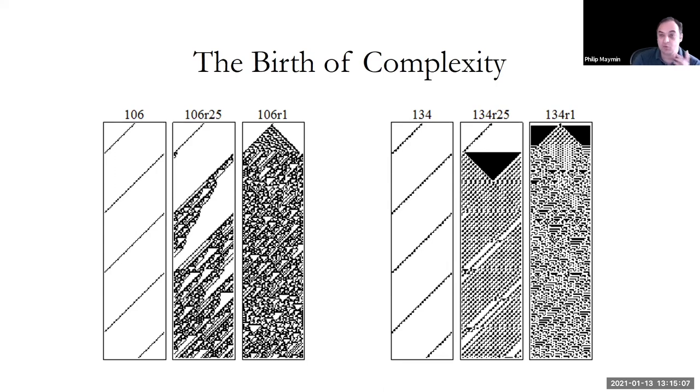We have complexity where we had no complexity before. It looks as if redistribution, socialism, communism is creating beautiful, wonderful complexity. Thank God, this is wonderful. And it happens also for 134. Every 25, not so much, but every one. Excellent. That's not the only thing that can happen. What else can happen? Complexity could be born, but it could also die.